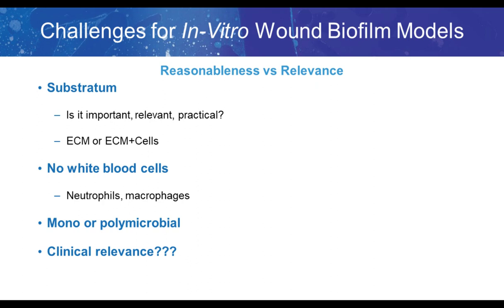Some challenges for in vitro wound biofilm models: it's always a balance between reasonableness and relevance. The substratum is an important consideration — whether it's relevant or practical depends on the treatment to be applied. For example, an oxidizing antimicrobial like hypochlorite or iodine will find that extracellular matrix or cells provide more organic matter, making it harder for treatment to destroy the biofilm. Hardly any models incorporate white blood cells, which is difficult especially with neutrophils that don't grow in culture. Testing against multiple models is a good approach, but the clinical relevance of these in vitro models remains unclear.